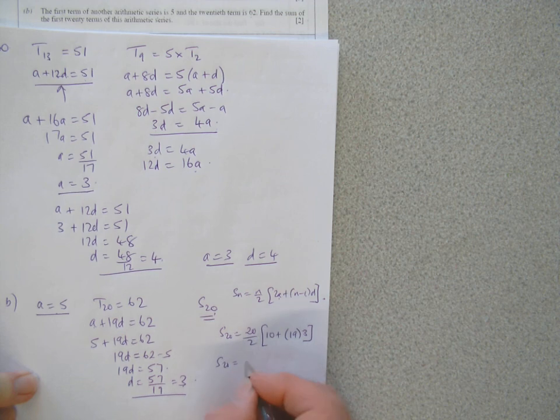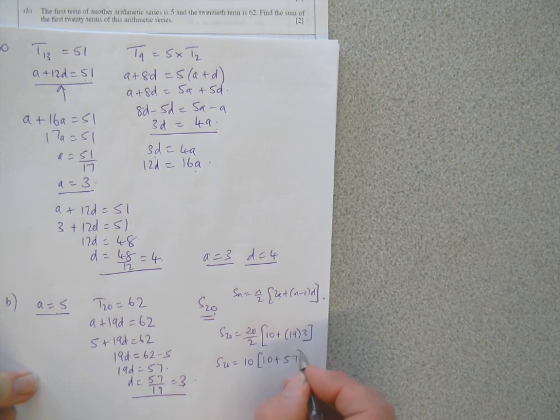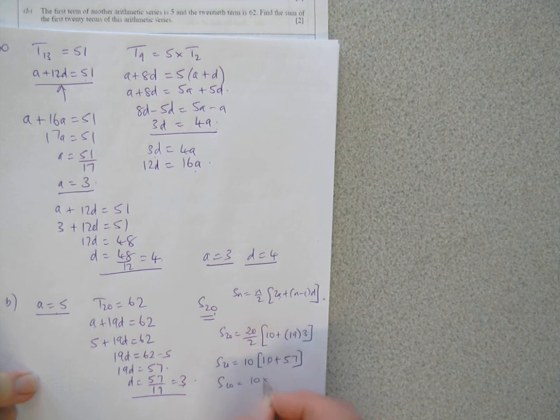So 20 shared by 2 is 10, and 10 plus 3 times 19, so 57, 10 times 67, which is 670.